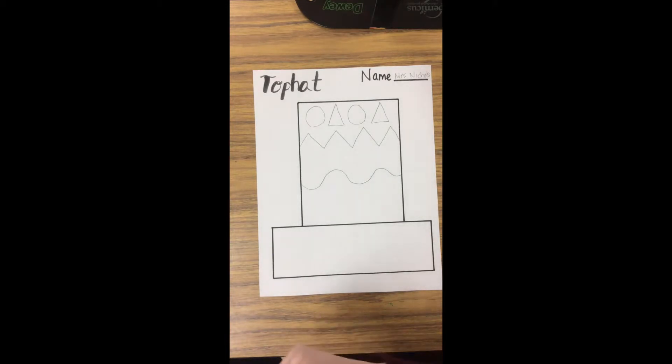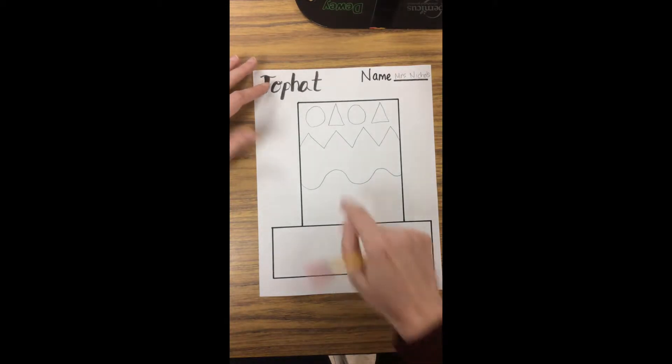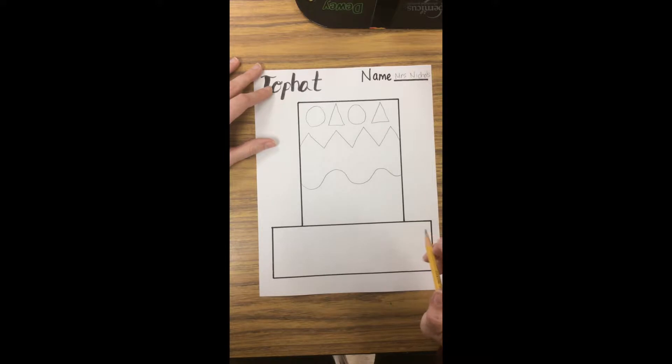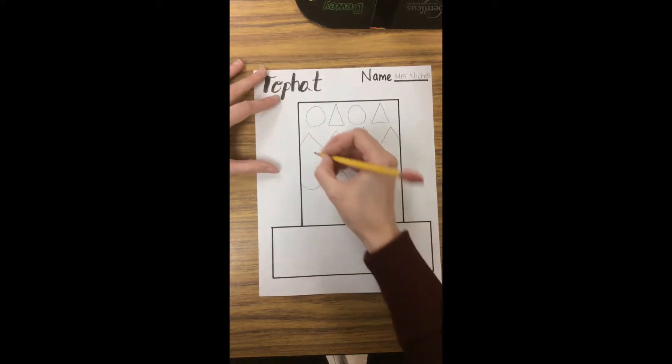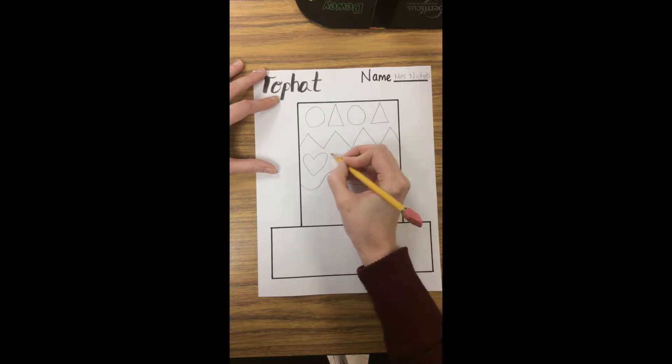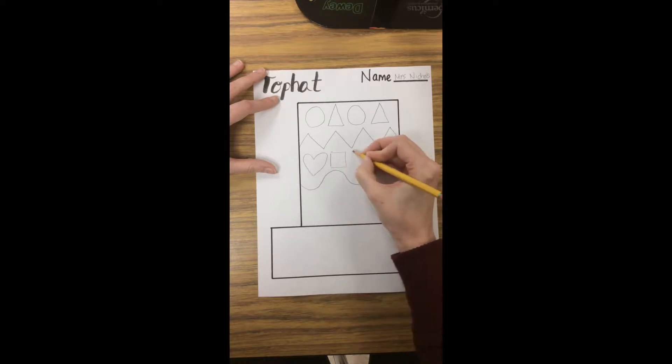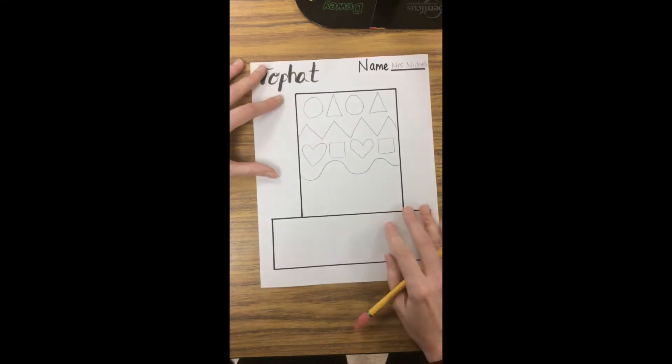I could also do that with three different shapes. I think on the top part I'm going to stick with two. So I'm going to pick another two shapes to make a pattern with: heart, square, heart, square. And then I'm going to do two different ones for these spaces.